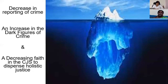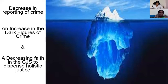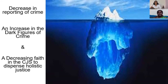We all know why there is a decrease in the reporting of crime and an increase in the dark figures of crime. The National Crime Records Bureau gives us figures about the number of crimes, acquittals, and convictions, but this figure is not really the true figure — a large portion of crimes are unreported and lie under the sea level. We need to strengthen our system, encourage the reporting of crime, and increase the faith that victims and offenders have in the criminal justice system.